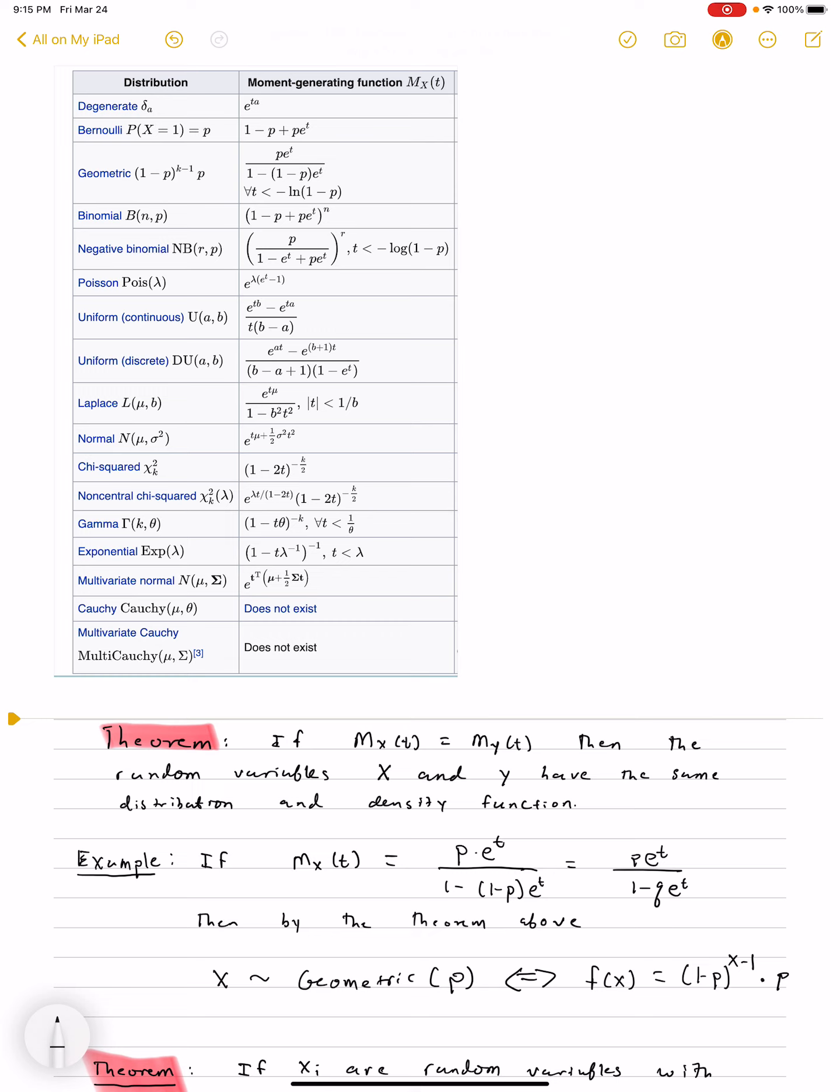You have the moment generating function, and if we have a list of them, well, it's unique, so it has to be the same as the geometric distribution.